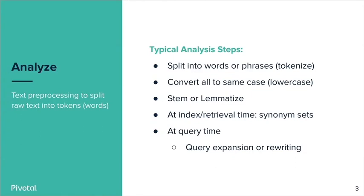In the end, you might also have some steps either at indexing or retrieval time where you take into account synonym sets. What I mean by that is you already know what words mean roughly the same thing. So either at indexing time you index it under both words that mean the same thing, or at retrieval time you expand the query to include other synonyms as a possibility.